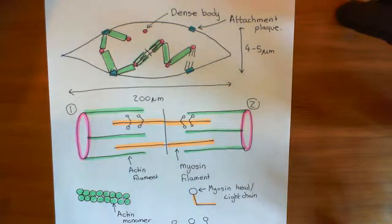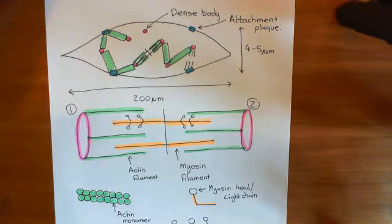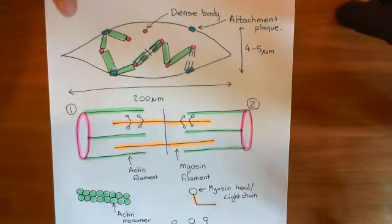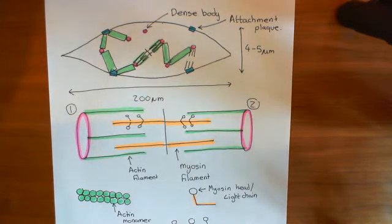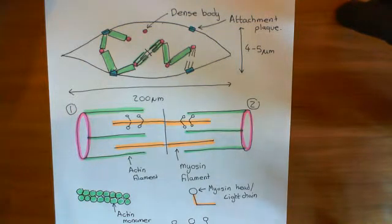Welcome to this next video in which we are discussing bradykinin-induced vasodilation. We've looked at the basic setup for how smooth muscle cells contract, so that we can then go on to understand how nitric oxide is going to produce a relaxation in these smooth muscle cells.